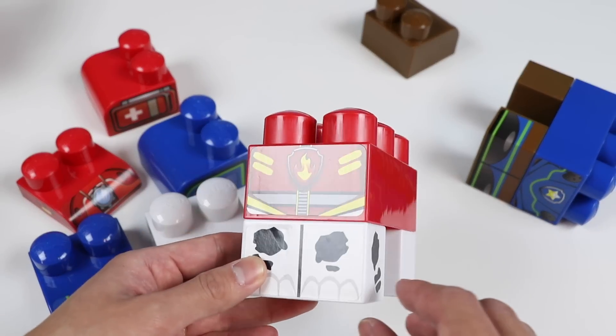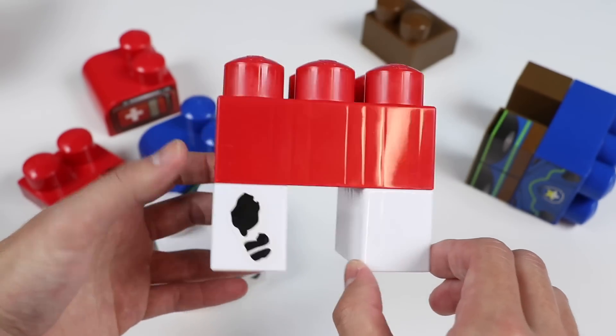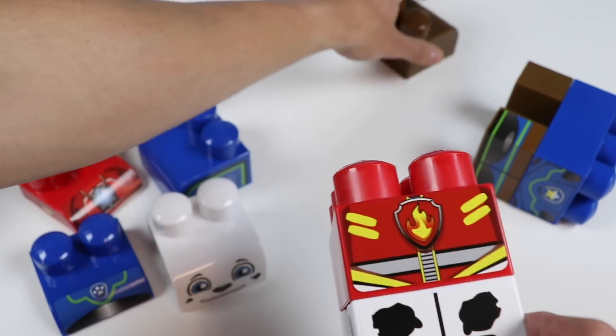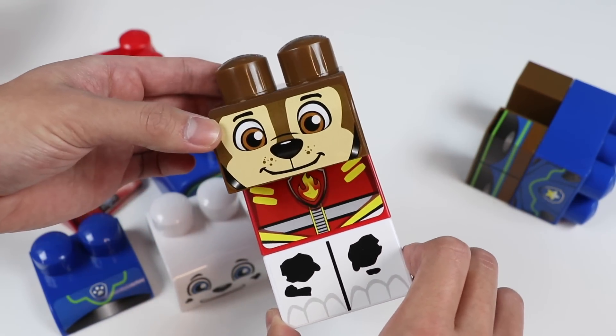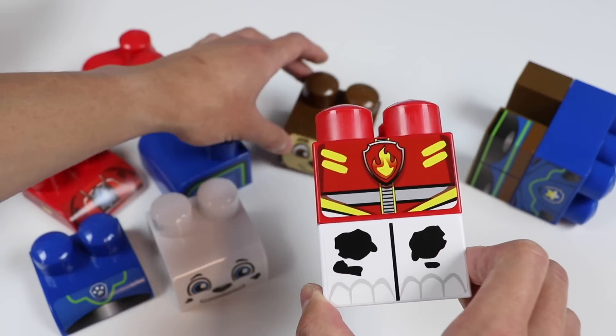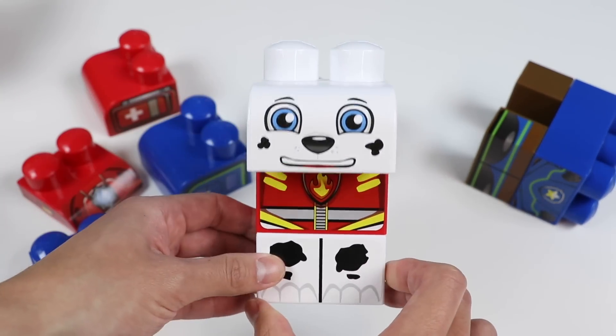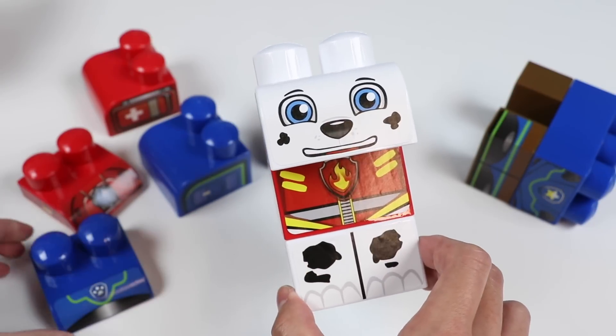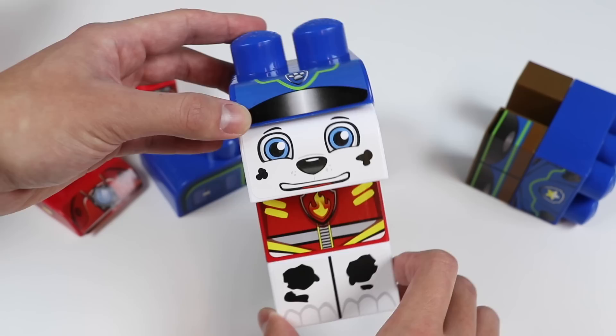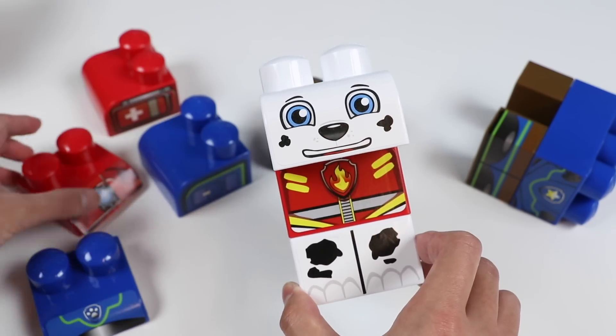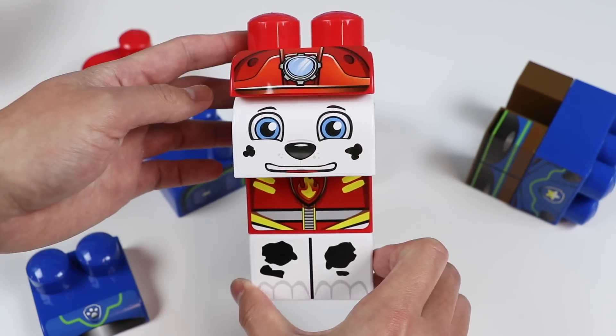Alright, we got two more Paw Patrol members. Here's a body with a red firefighter outfit and white legs with dots. Let's match the face! Does this face work? It looks good, but not quite. Then it must be this one! Hey! It's Marshall the firefighter pup! Hang on Marshall! We just need a few more pieces! Does this blue hat work? Nope! Then it must be this one! Here's Marshall's firefighter helmet!